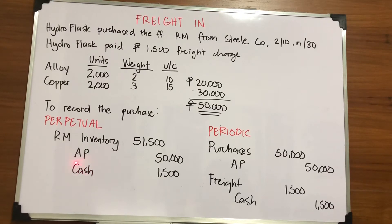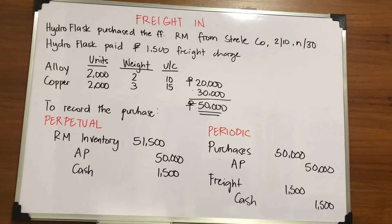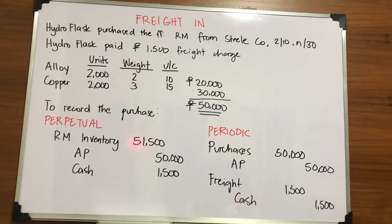Why cash and not accounts payable for the freight of $1,500? It is because of the word 'paid' — this is a hint for payments made in cash. So you recognize cash of $1,500. To summarize under perpetual: debit raw materials inventory for $51,500 (invoice cost plus freight), credit accounts payable $50,000, and credit cash $1,500 for freight.